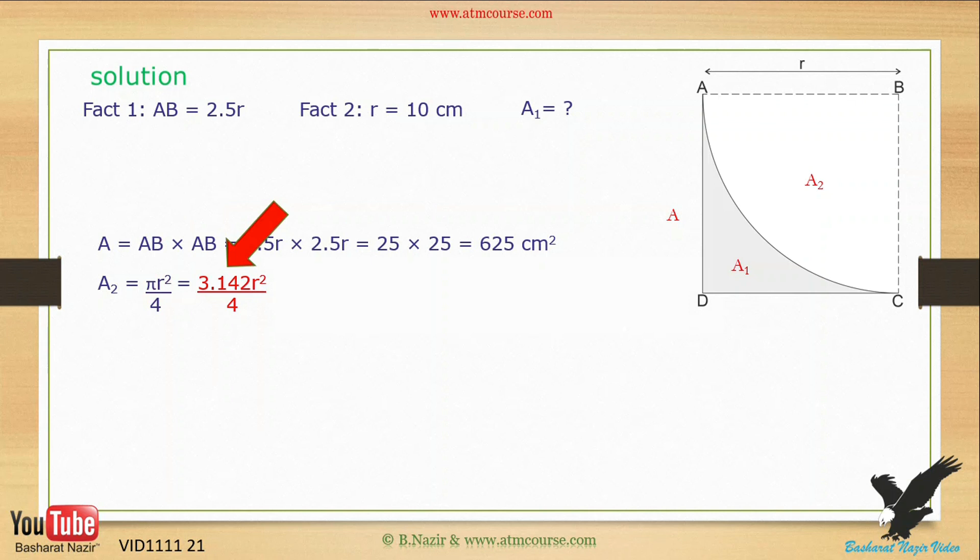Write in the values for pi, which is 3.142. Write in the value for the radius, which is 10 centimeters. Next, work out this. The result of this calculation is 78.55 square centimeters.